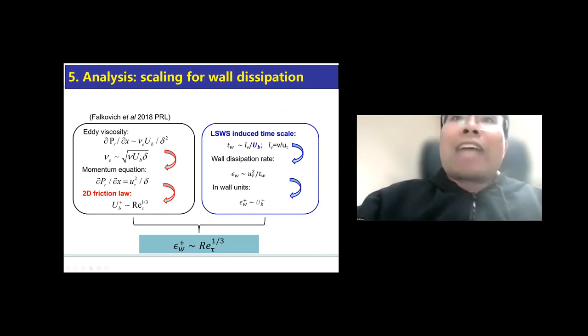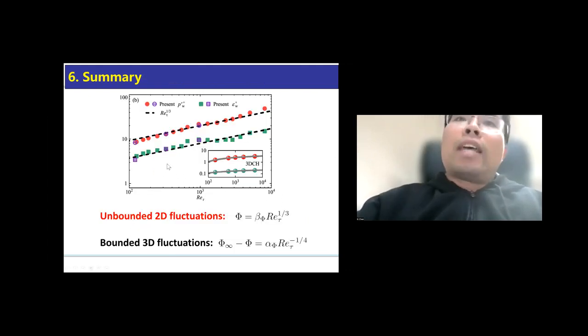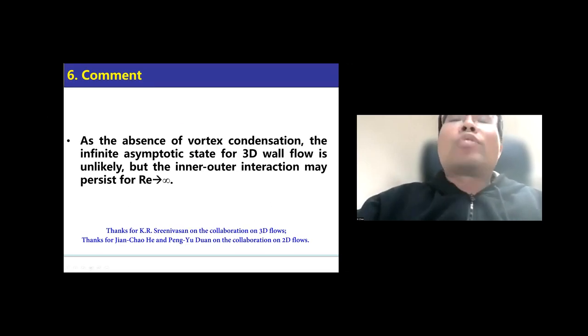Now, let's look at the wall dissipation rate. The wall dissipation rate, it corresponds to the amount of kinetic energy dissipated over a certain time scale. If this time scale scales with the viscous time scale given by L_nu over u_tau, then everything gets back to the law of the wall. This is not the case for 2D channel flows. Instead, since there are large-scale wave structures influencing the near wall region, as a result, we argue that the time scale should be given by the viscous length over the outer velocity scale. By this, we have an estimation that the wall dissipation rate in wall units scales as the bulk velocity. And then, together with the 2D friction law, we thus obtain the dissipation rate scales as Re_tau one-third. Then, by dimensional argument, we can extend such a one-third scaling to the wall-pressure RMS.